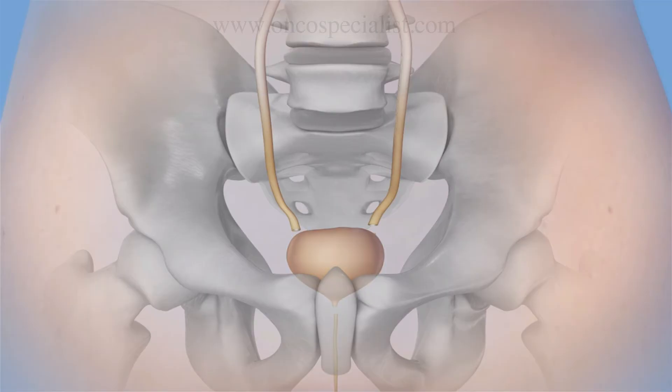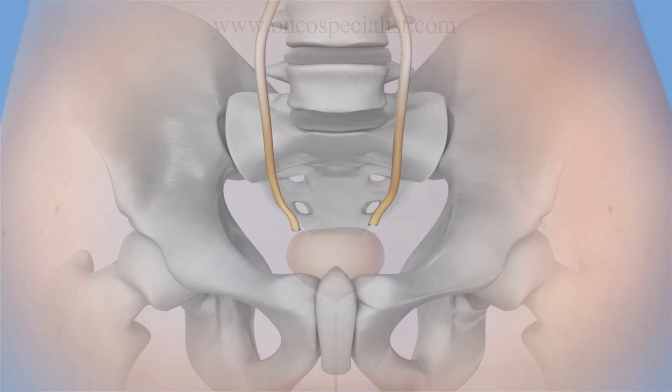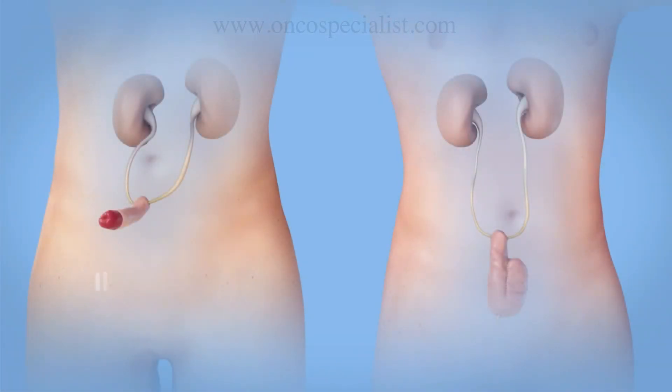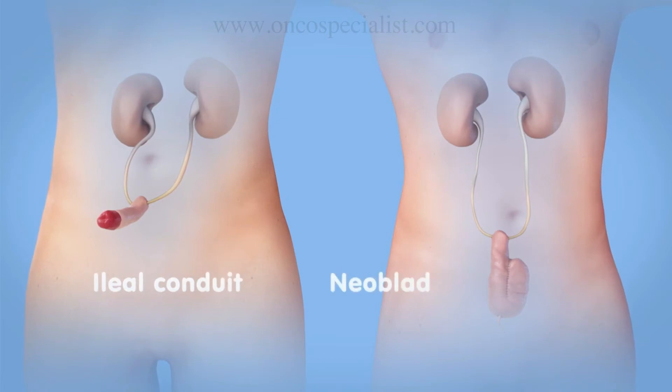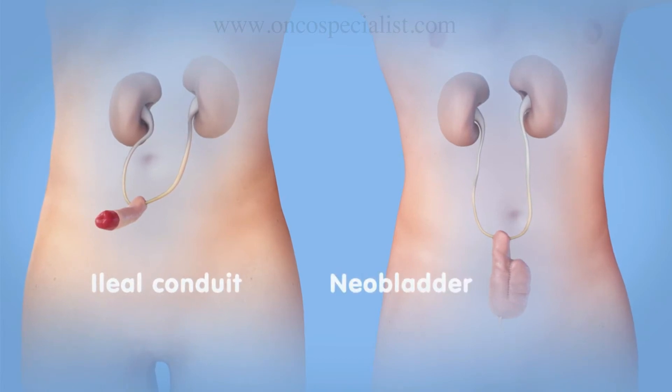Once that is done, as a surgeon we need to create a urinary diversion. There are two types of urinary diversion: one is ileal conduit and another is a neobladder.